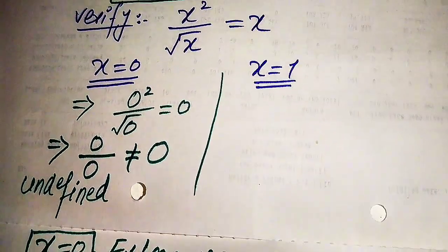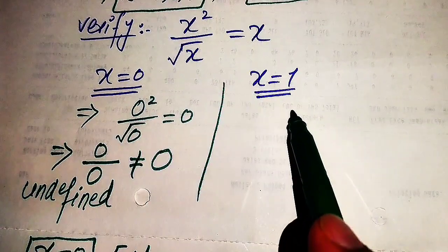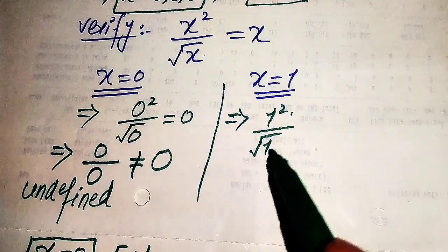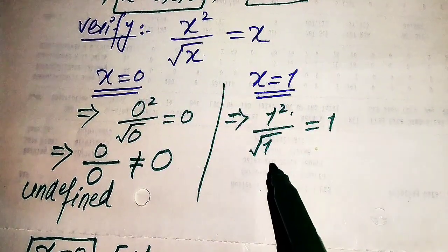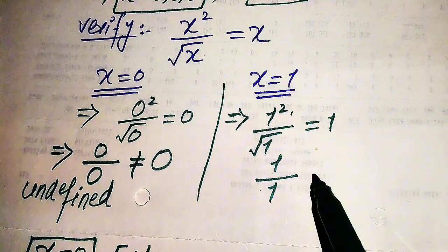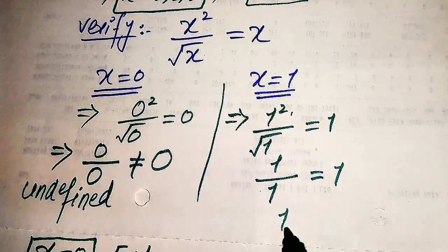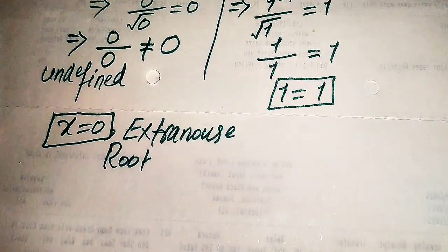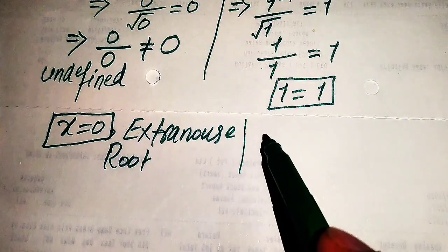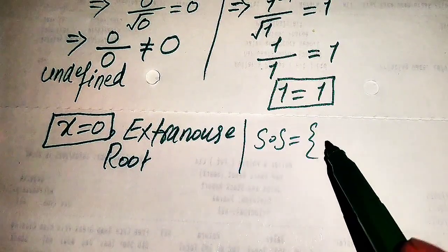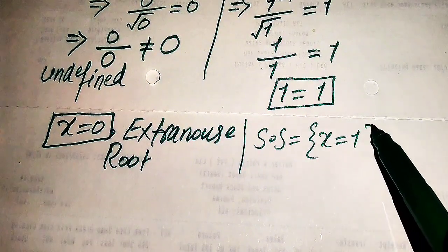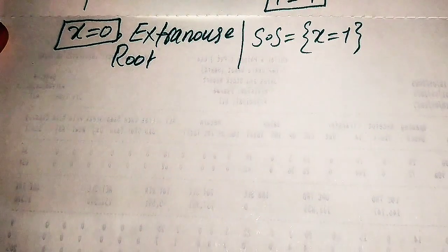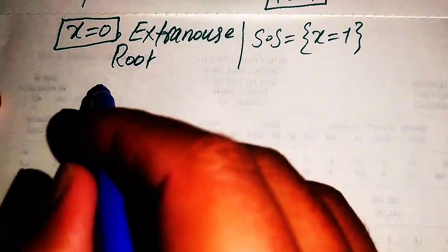Now we verify the second root, x equals 1. Substituting into both sides gives 1² divided by √1 equals 1, which simplifies to 1 over 1 equals 1. We clearly see that 1 equals 1, so both sides are equal. Therefore x equals 1 satisfies the given equation, and x equals 1 is the only solution of the given equation.